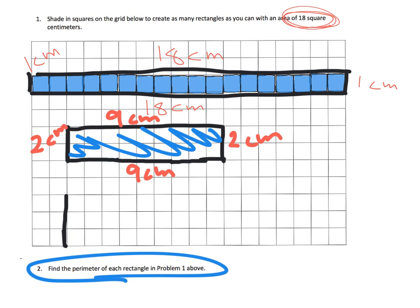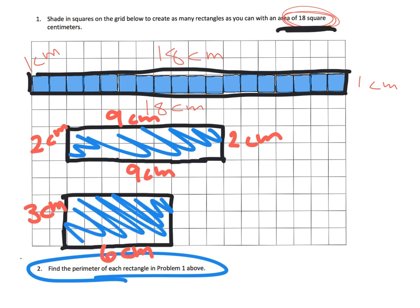What about 4 units tall? Parents and teachers, you might want to give students 18 square tiles and let them try to build a rectangle that is 4 units tall using all 18 squares — they won't be able to do it. And you can't do it with 5 units tall either. So we've now found all of our rectangles.